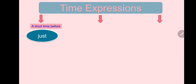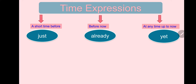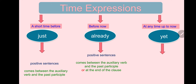Time expressions: Just — a short time before, meaning the action just finished. Already — before now. Yet — at any time up to now. 'Just' is used in positive sentences and comes between the auxiliary and past participle. 'Already' also used in positive sentences, comes between auxiliary and past participle, or at the end. 'Yet' comes in questions and negatives, at the end of the sentence.